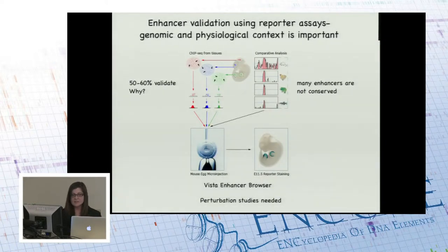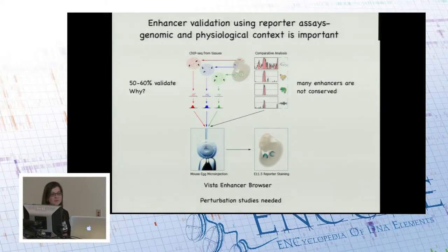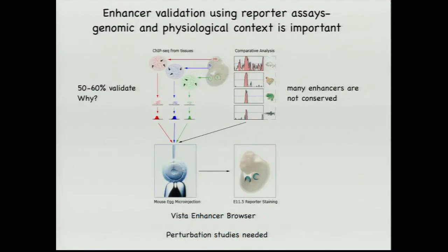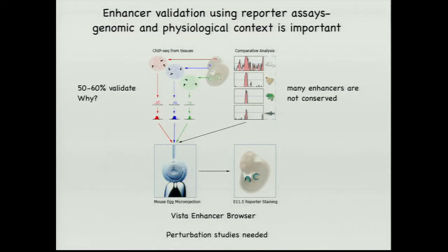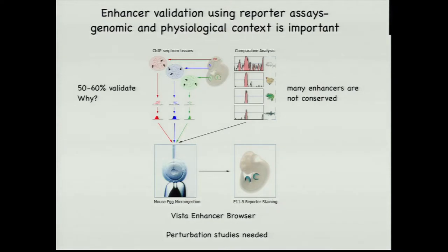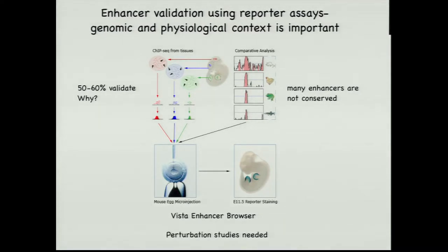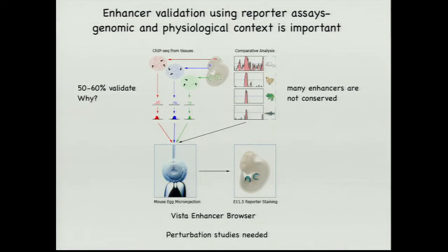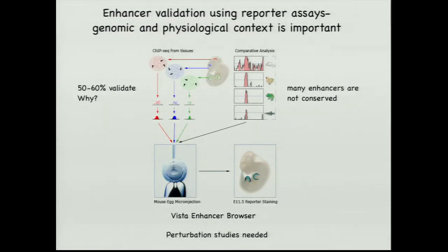To validate enhancers, we often use reporter assays, but that requires taking the enhancer out of context and guessing at what that element is in order to produce an output. Models where you can actually look at enhancer activity at an organismal level are certainly a huge benefit. But most of the time only about 50 or 60 percent validate. So why is that? Are we just taking it out of context and it needs other elements? How do we better understand what enhancer validation actually is?